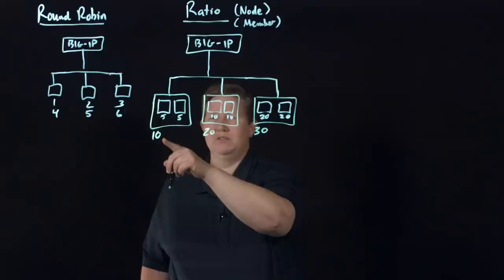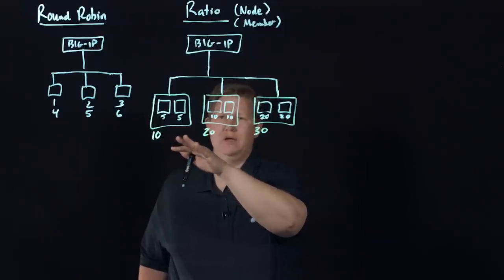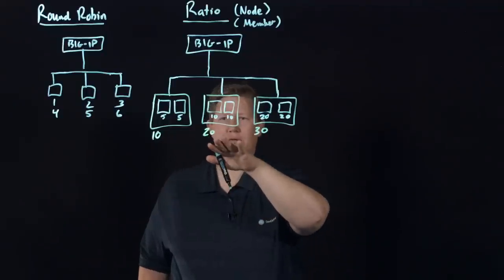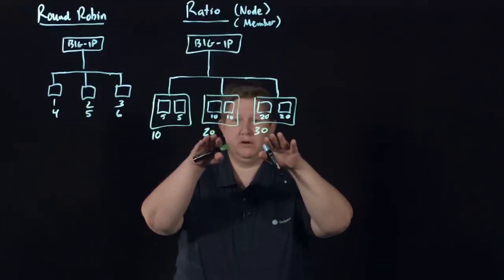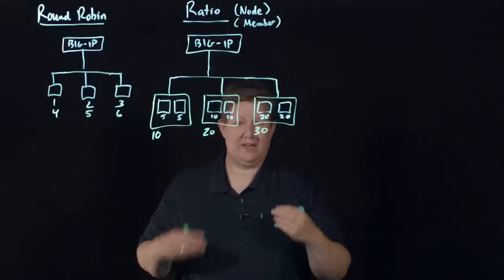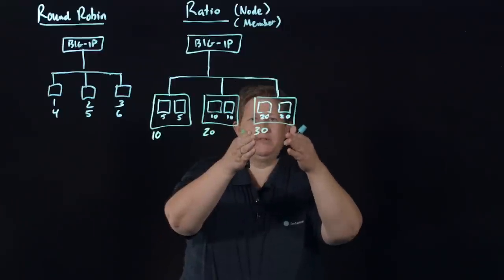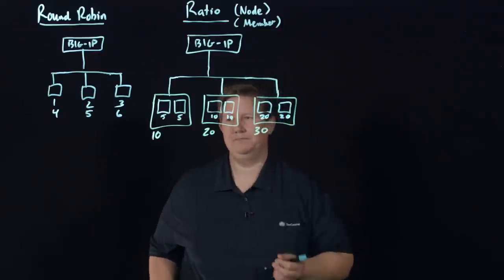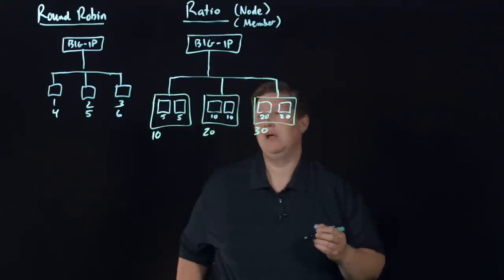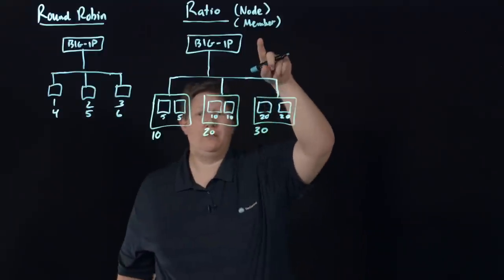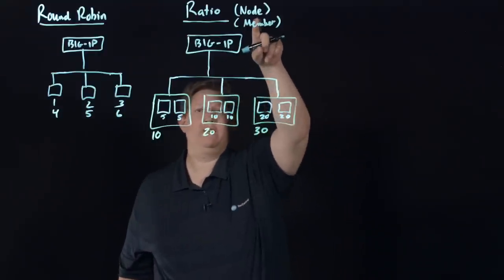At a node level and a pool member level I've got that configured. So what happens is if I have ratio node configured, no matter what's happening with all my different pools, once I get to 10 connections it's going to stop receiving traffic until the 20s are taken care of, and then 20s will stop until we get up to the level of 30.